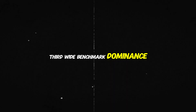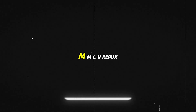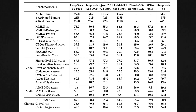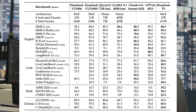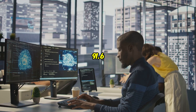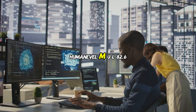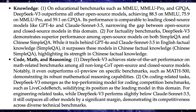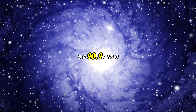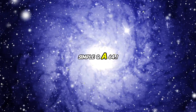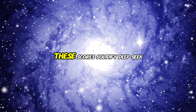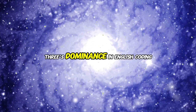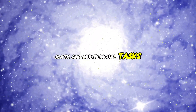Third, wide benchmark dominance. DeepSeek V3's performance on benchmarks is unmatched: MMLU Redux 89.1, MFDR 3-shot F1 91.6, HumanEval MUL 82.6, MATH 500 EM 90.2, and on Chinese benchmarks, CLUEWSC 90.9 and CSimpleQA 64.1. These scores solidify DeepSeek V3's dominance in English, coding, math, and multilingual tasks.